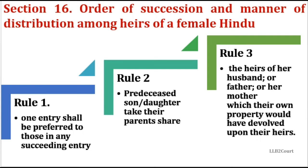Section 16 prescribes three rules about the order of succession and manner of distribution. Rule 1 states that the earlier entry shall be preferred over any succeeding entry — only when there are no persons in the first entry will the second entry persons get the property. Rule 2 states that a predeceased son or daughter will take the property on behalf of their parents. Rule 3 states that if property devolves upon heirs of the husband, father, or mother, we must consider it as their own property — if upon heirs of the mother then Section 15 applies, if upon heirs of the father or husband then Section 8 applies because they are males.